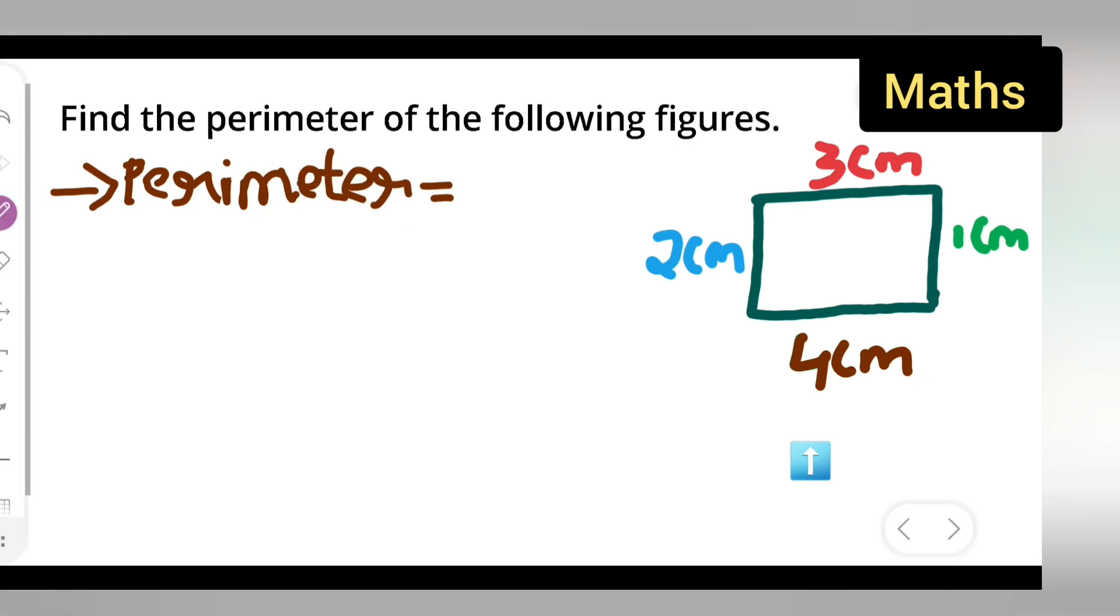Perimeter is equal to 2 cm plus 3 cm plus 1 cm plus 4 cm. Basically, what we are doing over here is adding all the sides. Okay, so now you can add that.